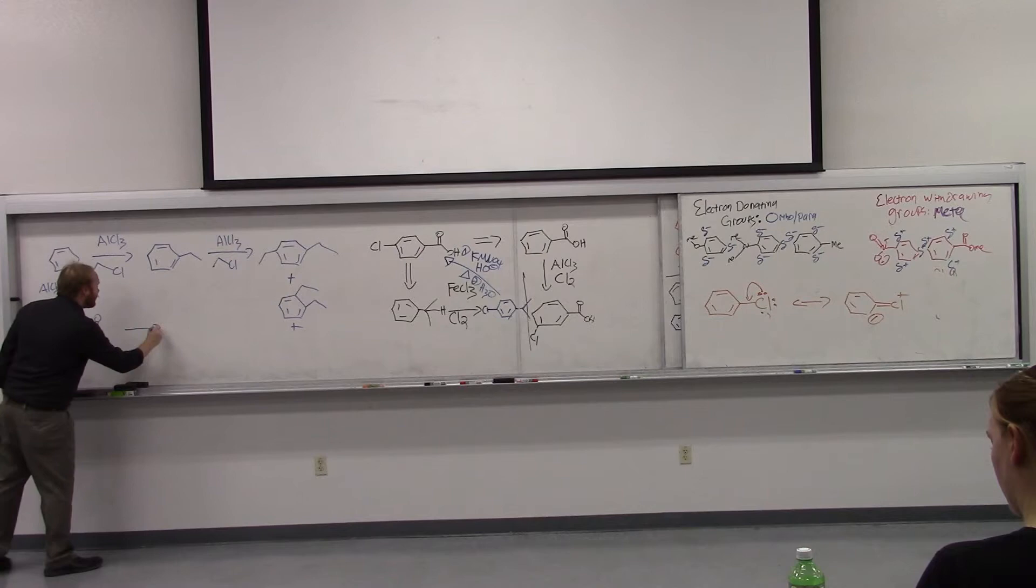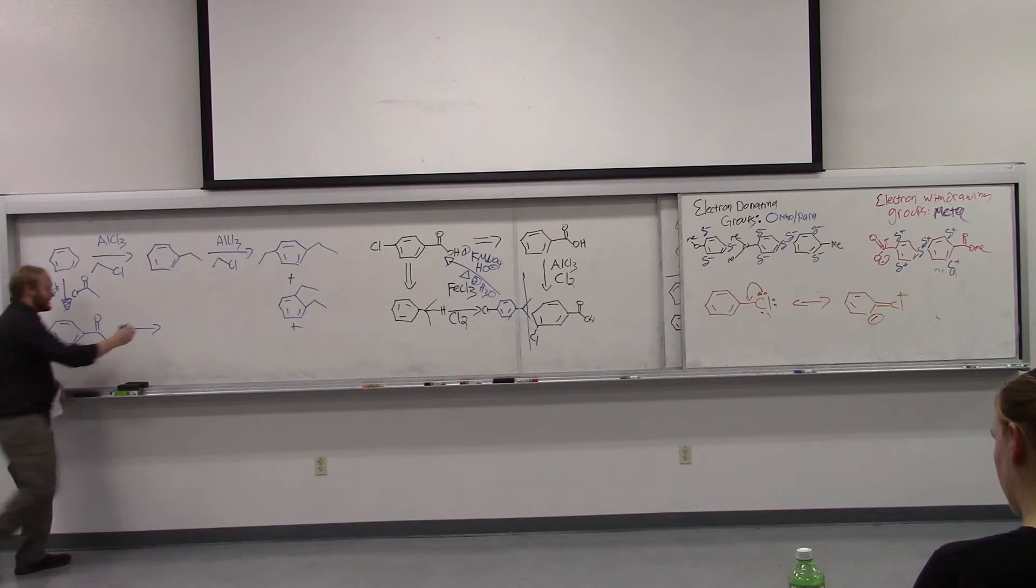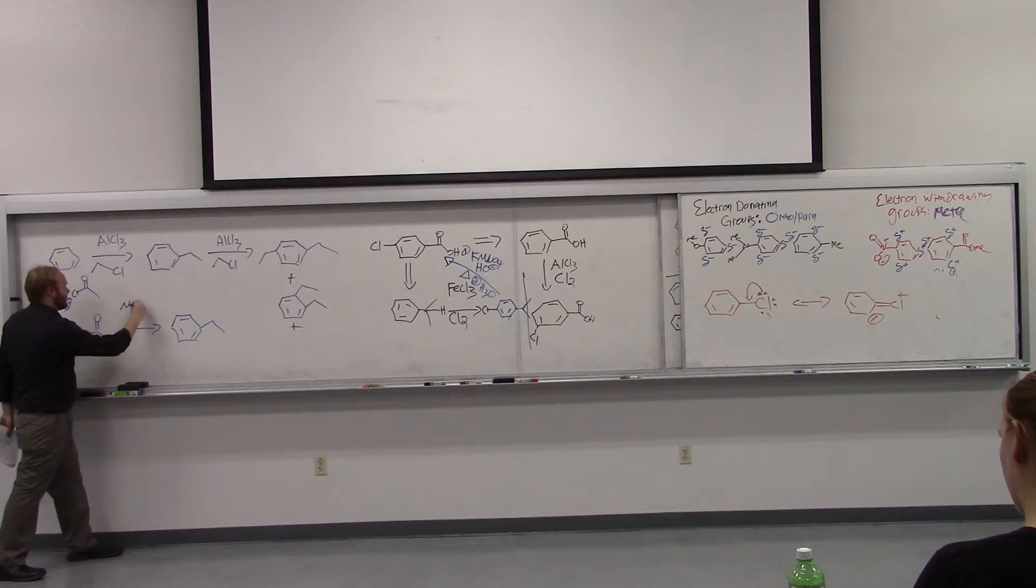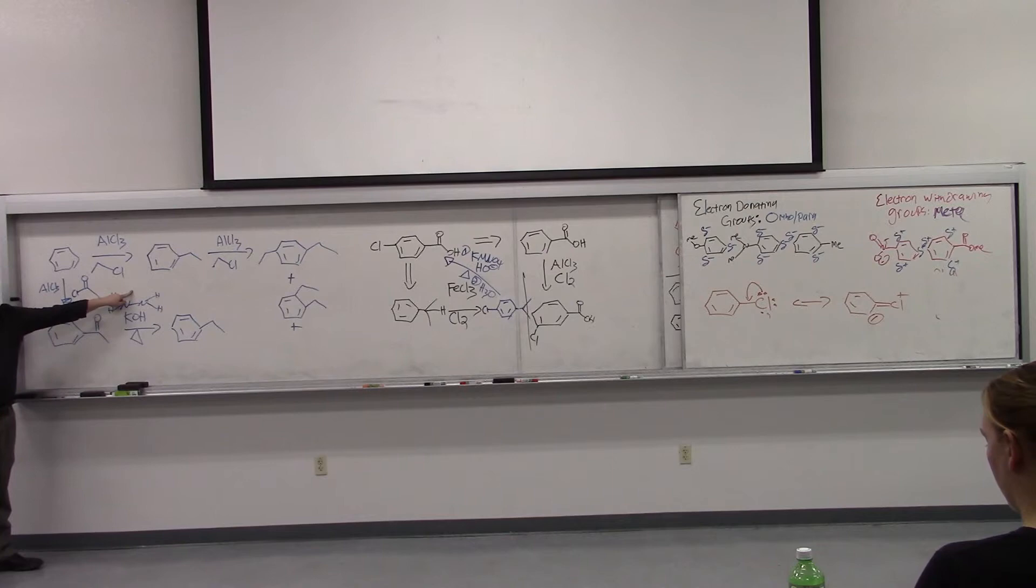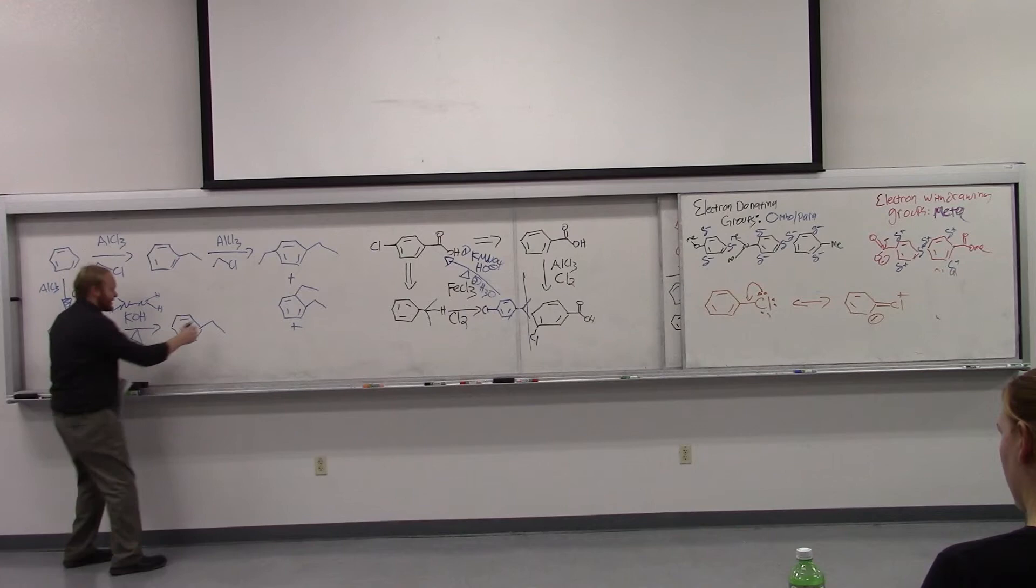And then we can do one of the reductions I showed you. We can either do the LAH, PBr3, more LAH to take this to ethyl benzene. Or we can do the Wolff-Kishner, which I talked about in lecture Wednesday. And remember Wolff-Kishner, we'll talk about the mechanism in Chapter 16. But the Wolff-Kishner is hydrazine, so rocket fuel, N2H4, potassium hydroxide, and heat. And then that will reduce any carbonyl to a CH2.